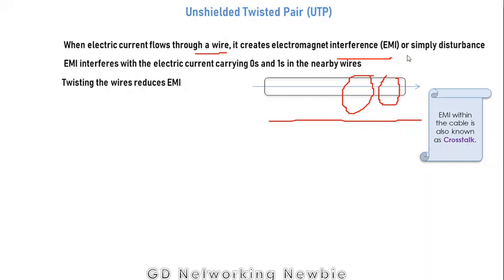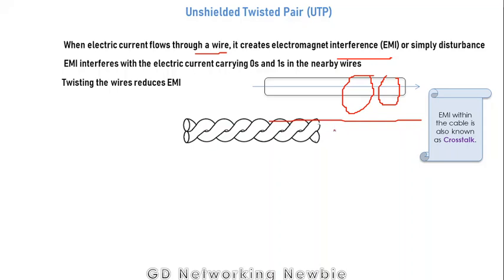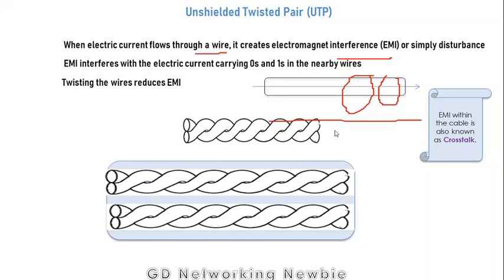To avoid or reduce EMI, we twist the wires. You can see an example of twisting here — wires are twisted with each other, and the purpose of twisting is to reduce the effect of crosstalk or electromagnetic interference. In UTP, we take two pairs of wires — one pair to transmit and one pair to receive — combine them, and call that unshielded twisted pair: one pair, second pair, two wires, two pairs combined.